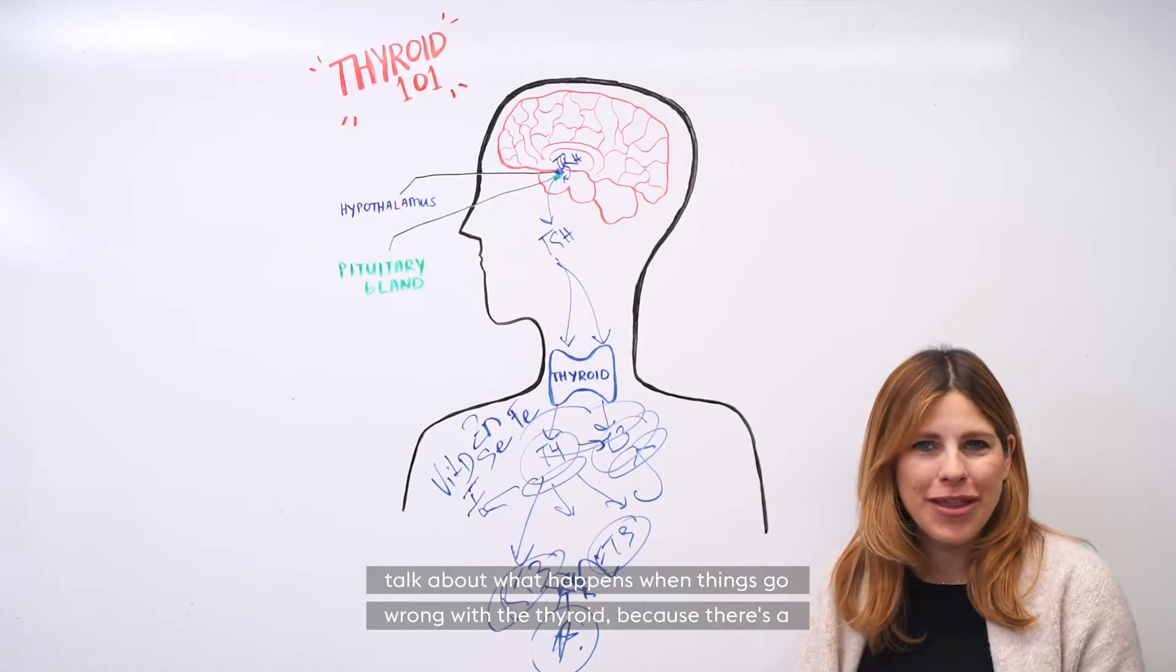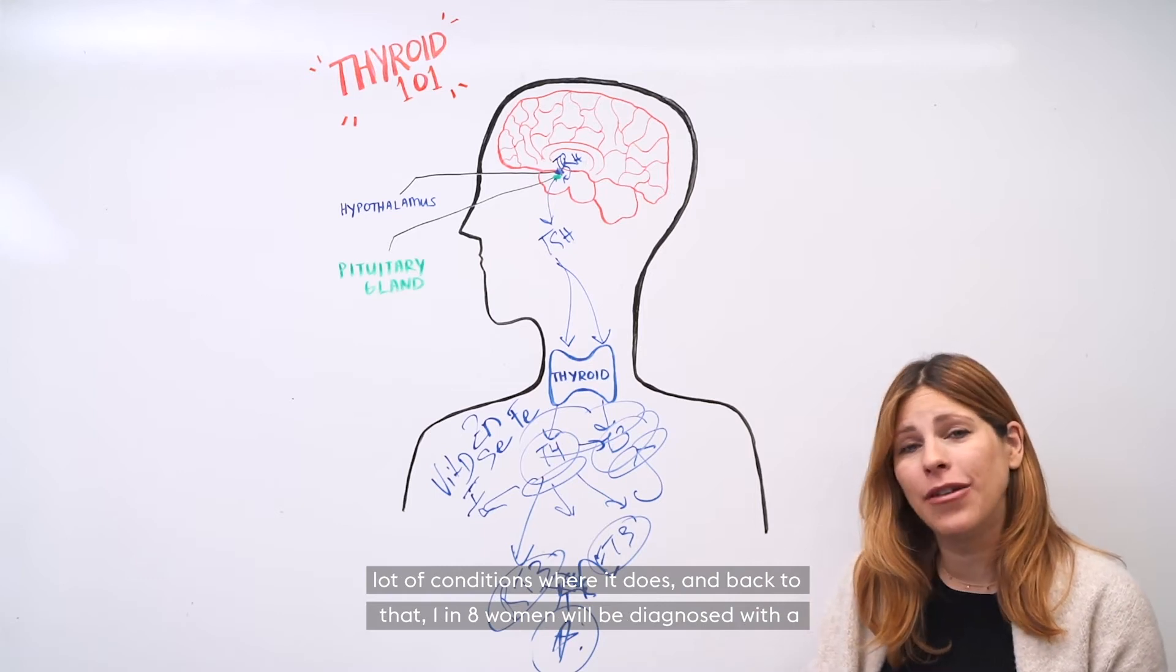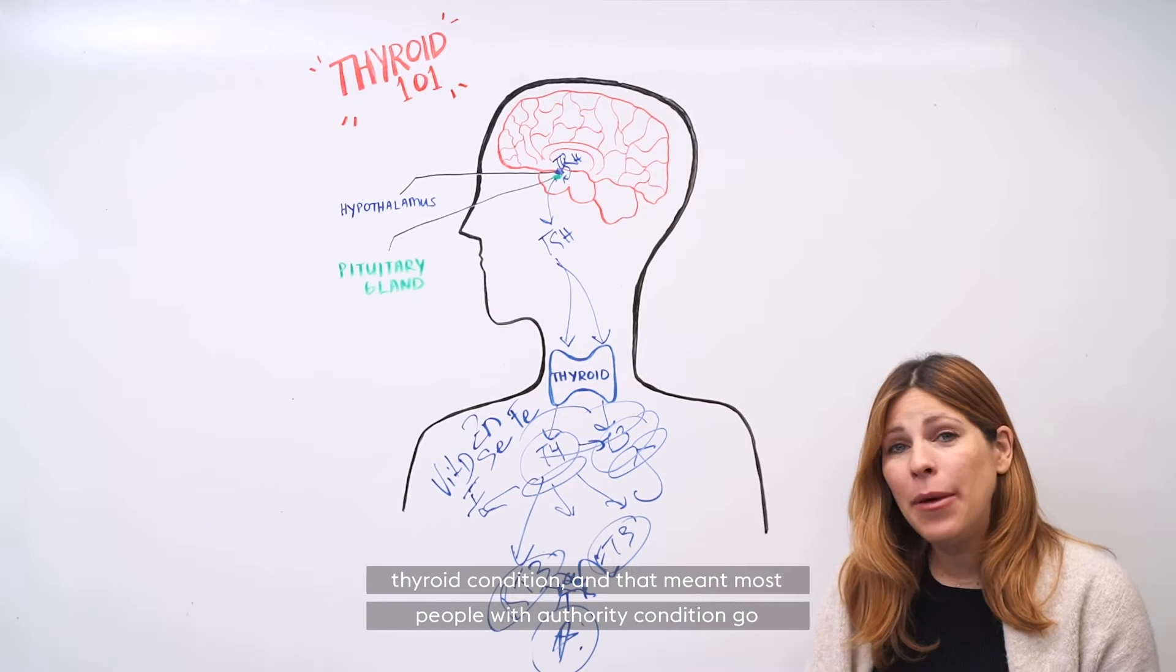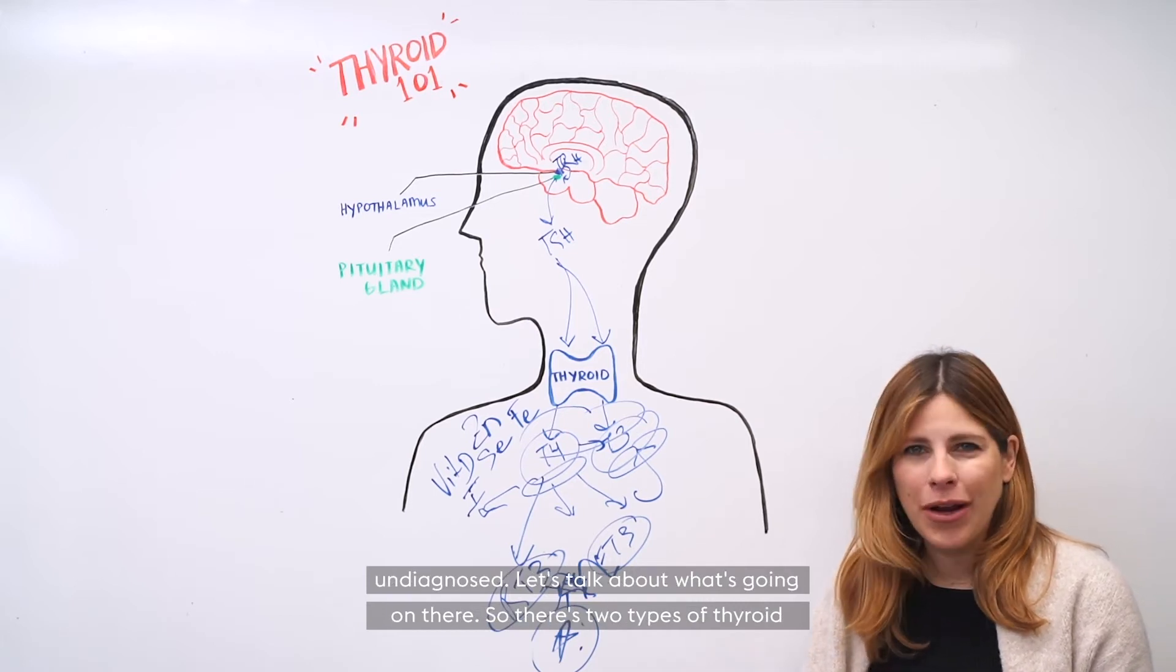So let's talk about what happens when things go wrong with the thyroid, because there's a lot of conditions where it does. And back to that one in eight women will be diagnosed with a thyroid condition and that most people with a thyroid condition go undiagnosed. Let's talk about what's going on there.